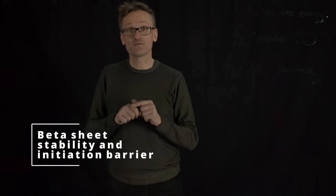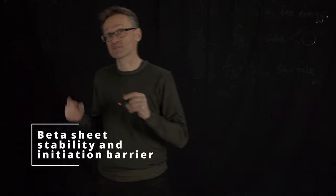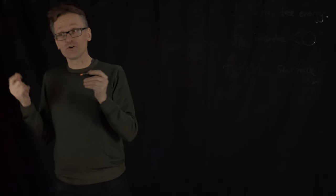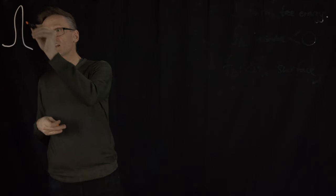So to understand beta sheets we're going to need to focus on the antiparallel case. Let me draw a couple of alternatives for you. Starting out from a long coil, the first thing we can do is form what I call a single hairpin.